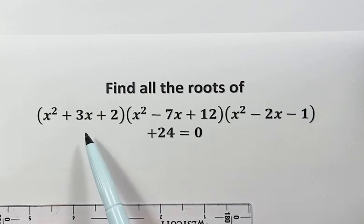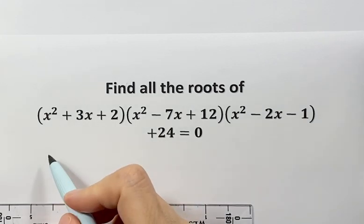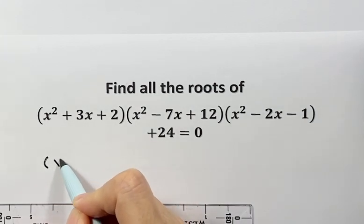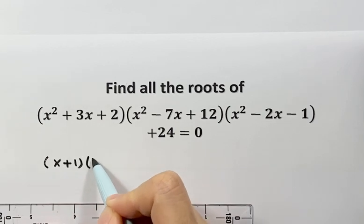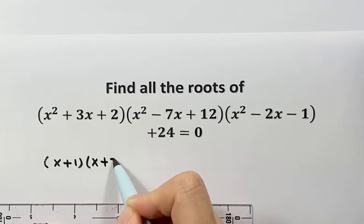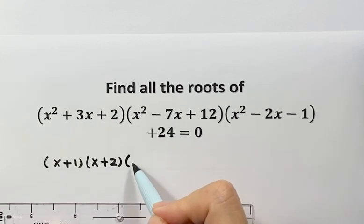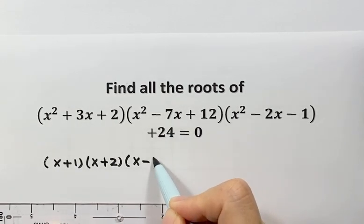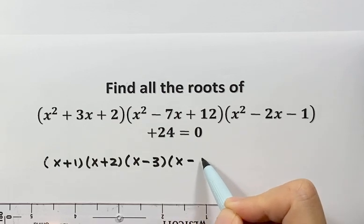First we are going to factor this part, so we have x plus 1, then x plus 2. Then factor the next one, that's x minus 3, then x minus 4.